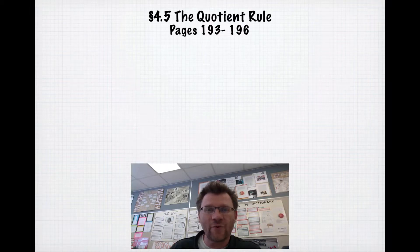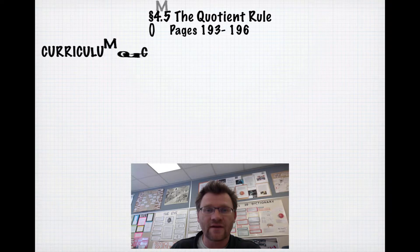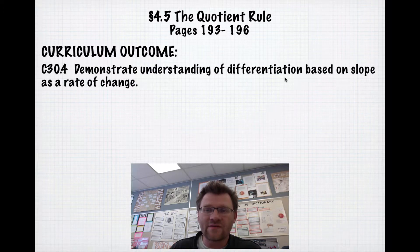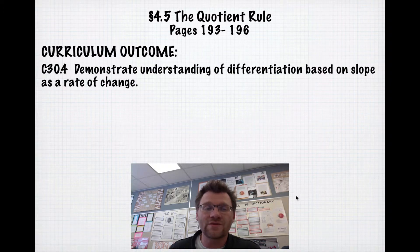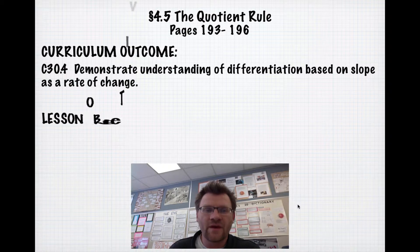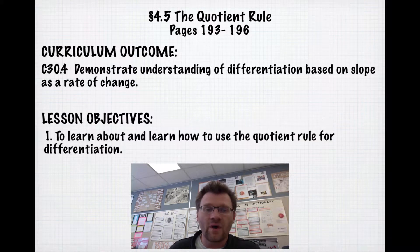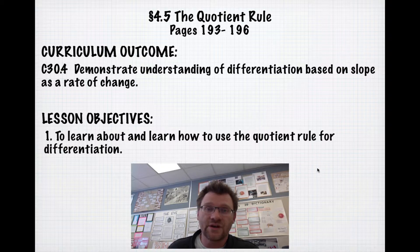Today's topic is 4.5, the Quotient Rule, on pages 193 to 196 in your text. Our curriculum outcome is to demonstrate understanding of differentiation based on slope as a rate of change. Our lesson objective today is just one: to learn about and learn how to use the Quotient Rule for differentiation.